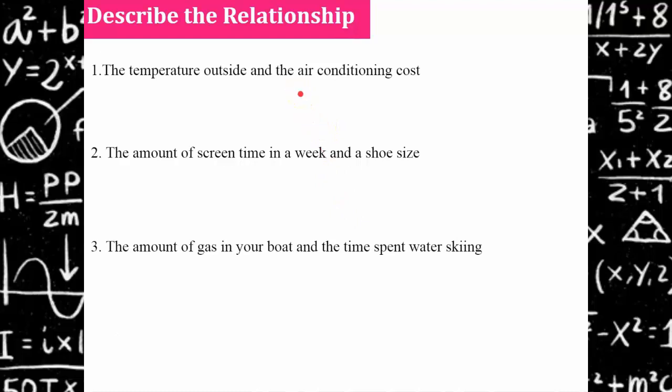So I'd like you to describe these relationships as positive linear, negative linear, or no correlation. Go ahead and hit pause. Read through the relationships and come back and hit play when you're ready to check your work.